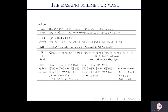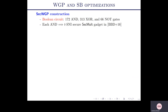To construct secure WGP, since WGP is defined over finite field F2^7 with additive sharing, we generate an optimized Boolean circuit for secure WGP containing 172 AND gates, 313 XOR gates, and 66 NOT gates. We replace each AND gate using a TSNI-secure AND gadget, leveraging the existing literature — specifically the secure AND gadget from Barthe et al.'s work.